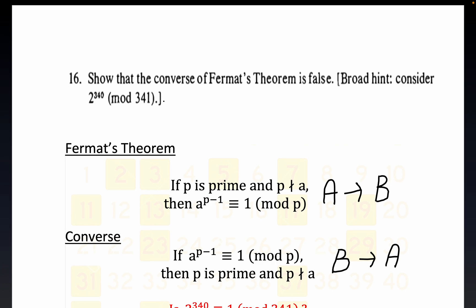He gives us what he calls a broad hint, which is this: we need to reduce 2 to the 340 mod 341. Now the thinking here is that 341 is not prime.